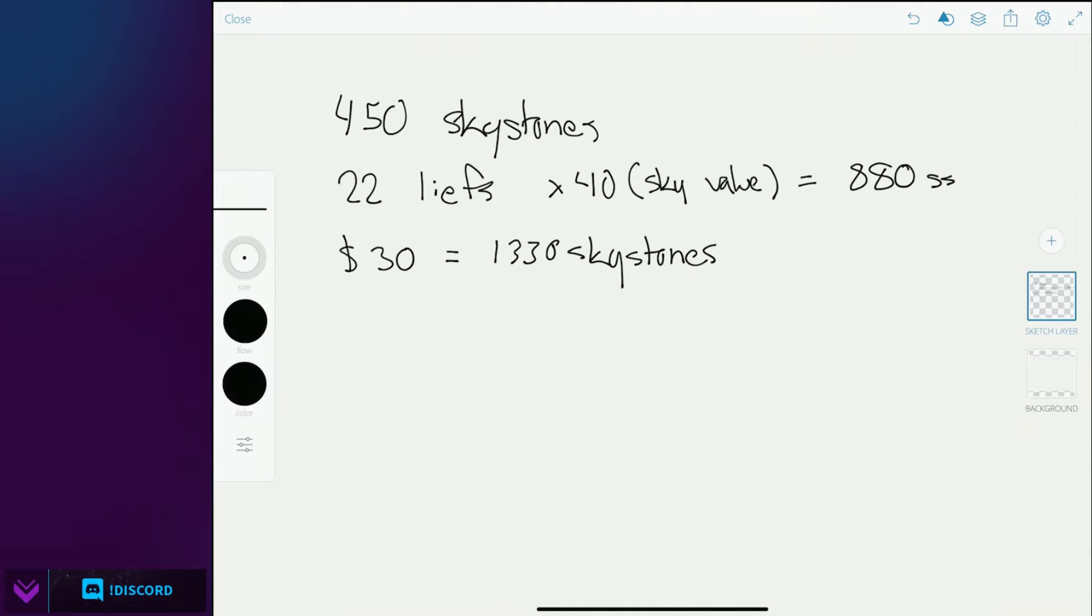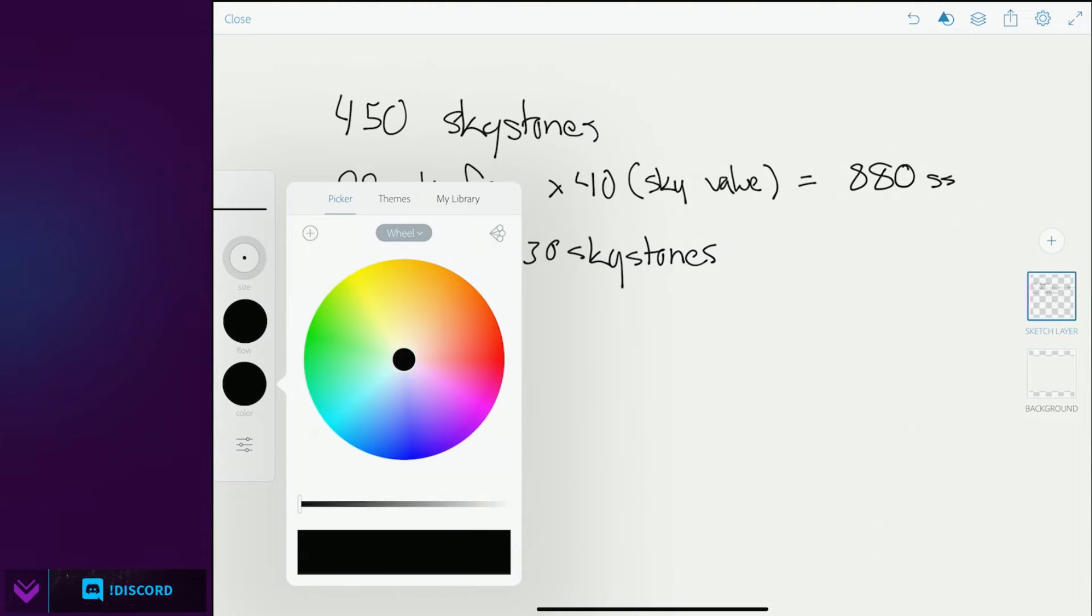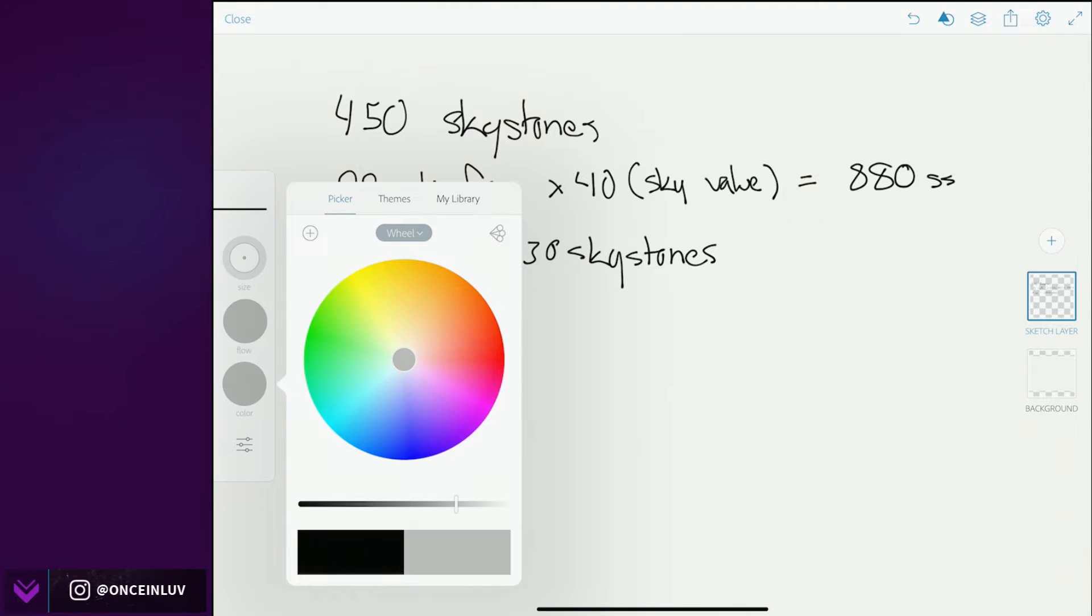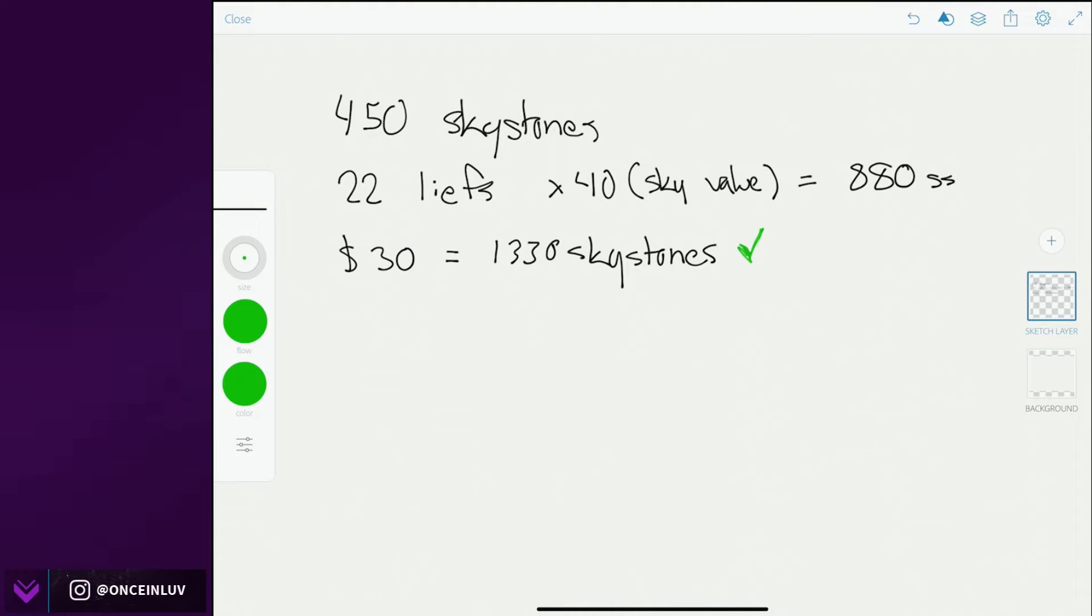Right, so at this value you're looking at 30 dollars is equivalent to 1330 skystones. So this is what I would consider the better value. But we'll give this one a checkmark and then we'll draw the line from there. Everything will be a decision based on this value, this will be leaf pack 2.